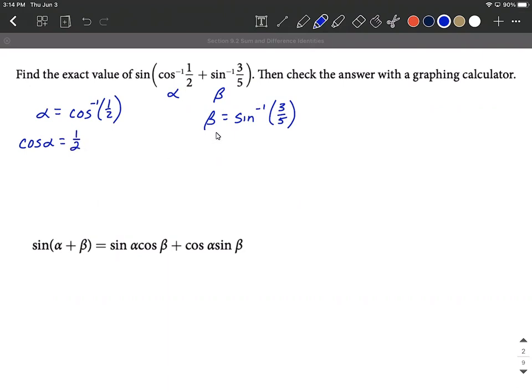Okay, and then over here we can do something very similar with our beta and sine inverse. We can say, well, if we apply a sine to both sides, we get sine of beta is going to equal three-fifths. And that's kind of important to rewrite these both in terms of cosine and of sine as opposed to the inverse functions. I find this handy anyway for me.